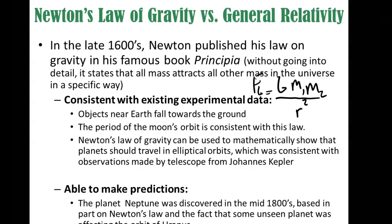Newton's law of gravity is consistent with existing experimental data, and it can make a lot of predictions that are confirmed by experiment — obviously predicting objects falling, but also if you use this law to calculate the period of the moon around the Earth, or the moons of Jupiter, things you can observe with a telescope, it's actually pretty consistent. A lot of discoveries were made using Newton's law of gravitation.